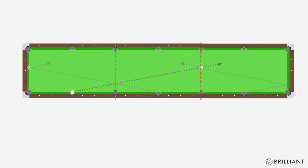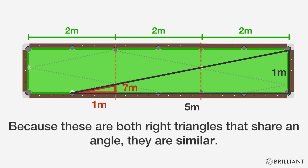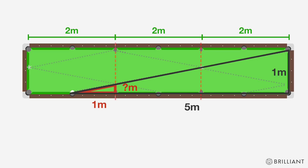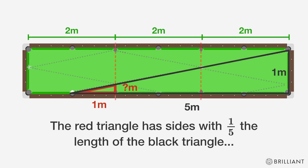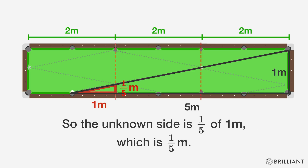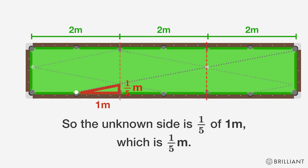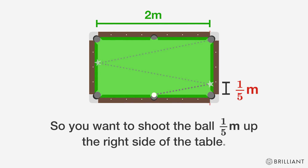Let's reflect the table again. Now we can draw two helpful triangles. Because these are both right triangles that share an angle, they're similar. This means their corresponding sides have a common ratio. The red triangle has sides with a fifth the length of the black triangle. So the unknown side is a fifth of one meter. So you want to shoot the ball a fifth of a meter up the right side of the table.